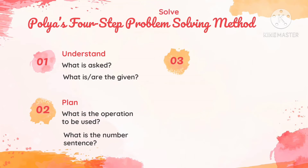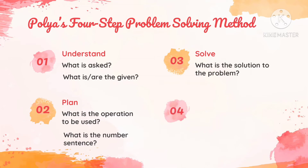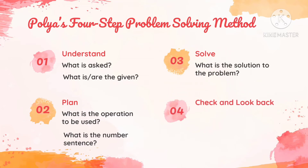The third step is to solve — you're going to show your solution on how we solve the problem. And the fourth step is to check and look back, where we're going to state our answer to the problem.